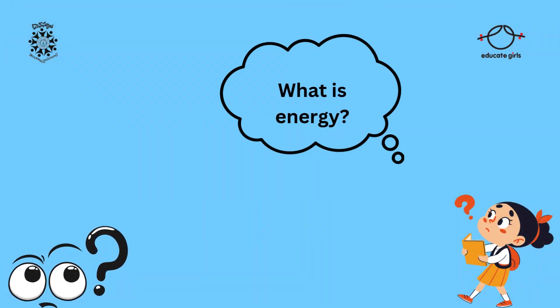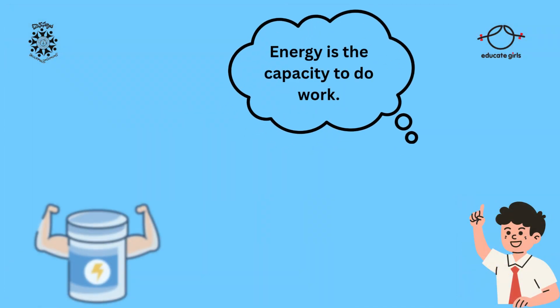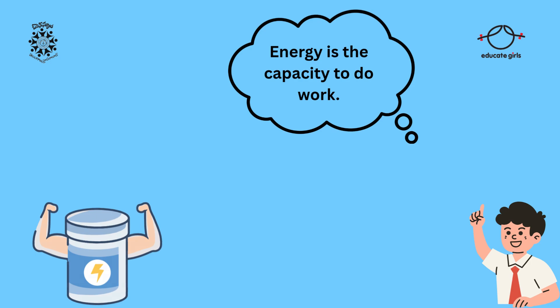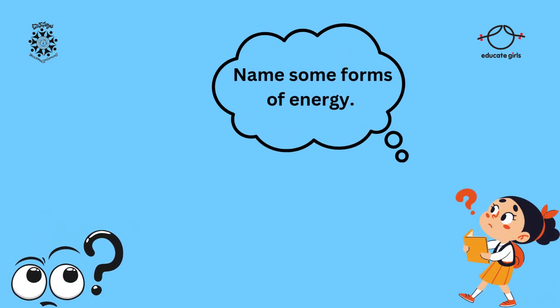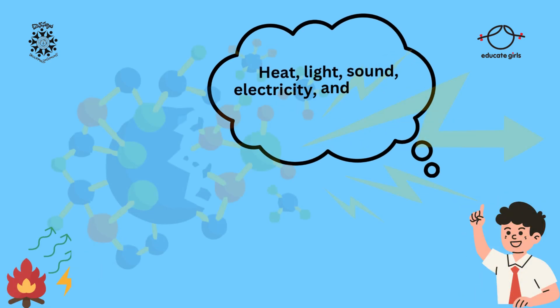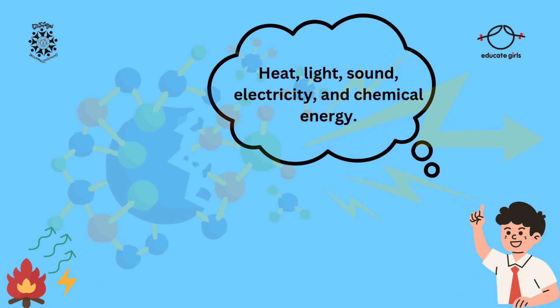What is Energy? Energy is the capacity to do work. Name some forms of energy. Heat, light, sound, electricity, and chemical energy.